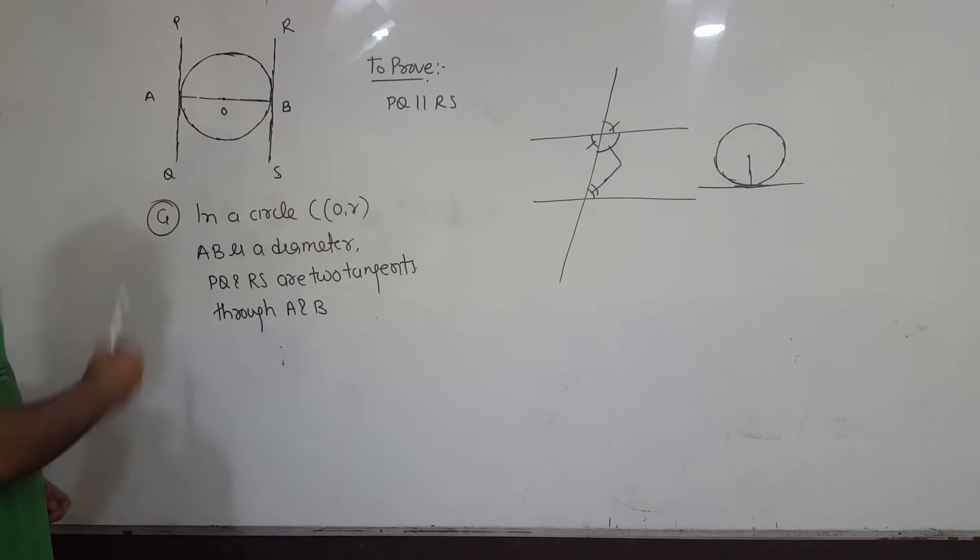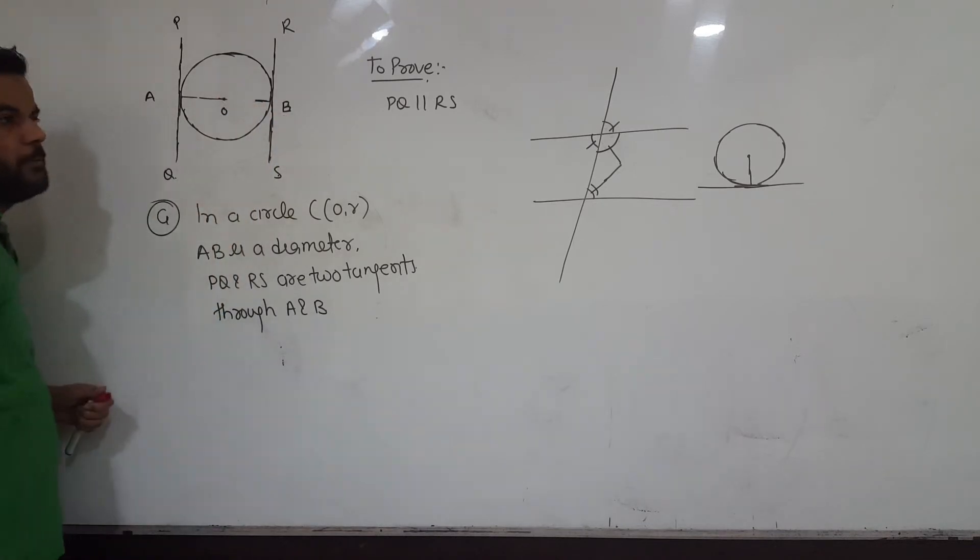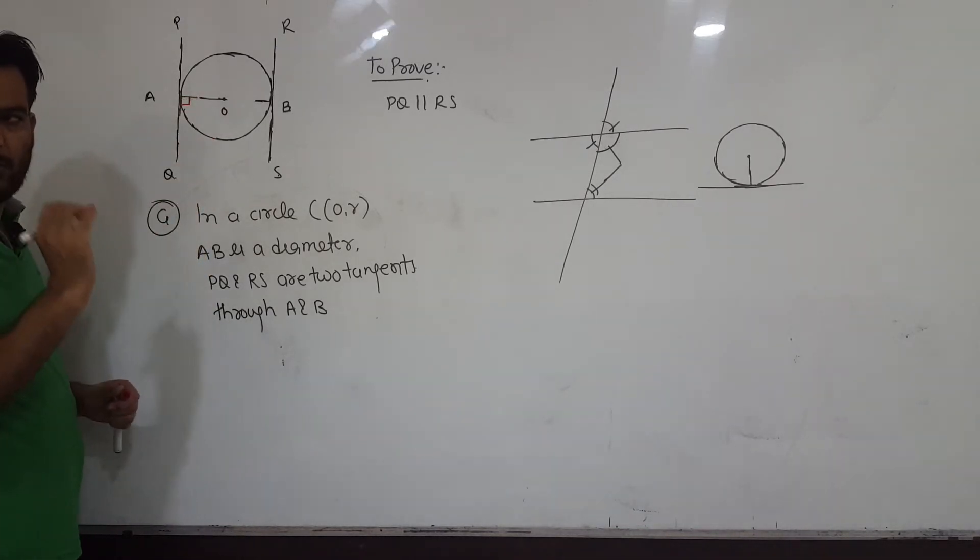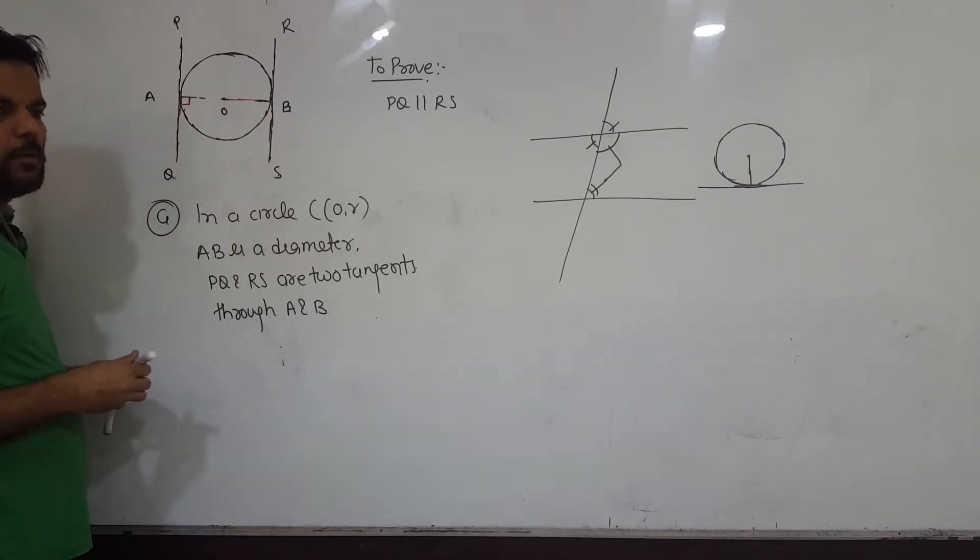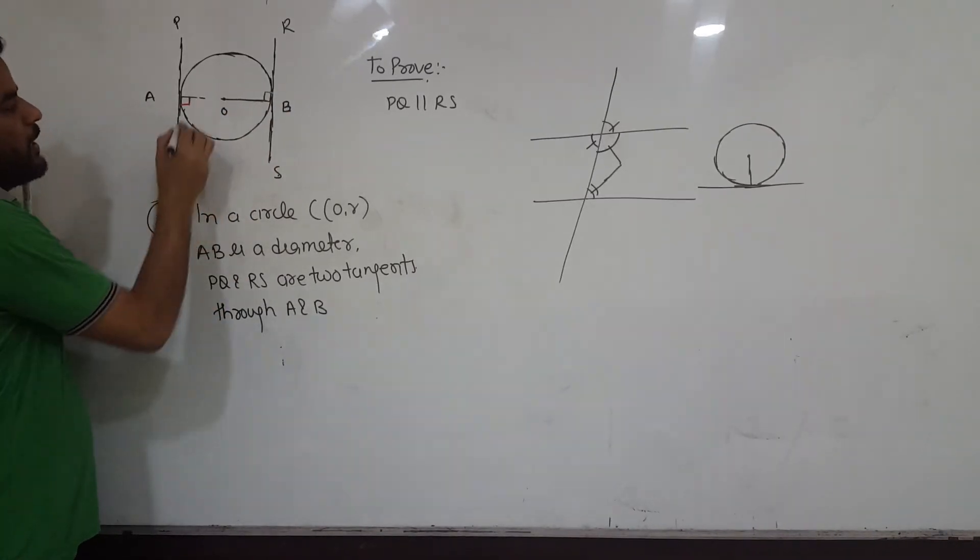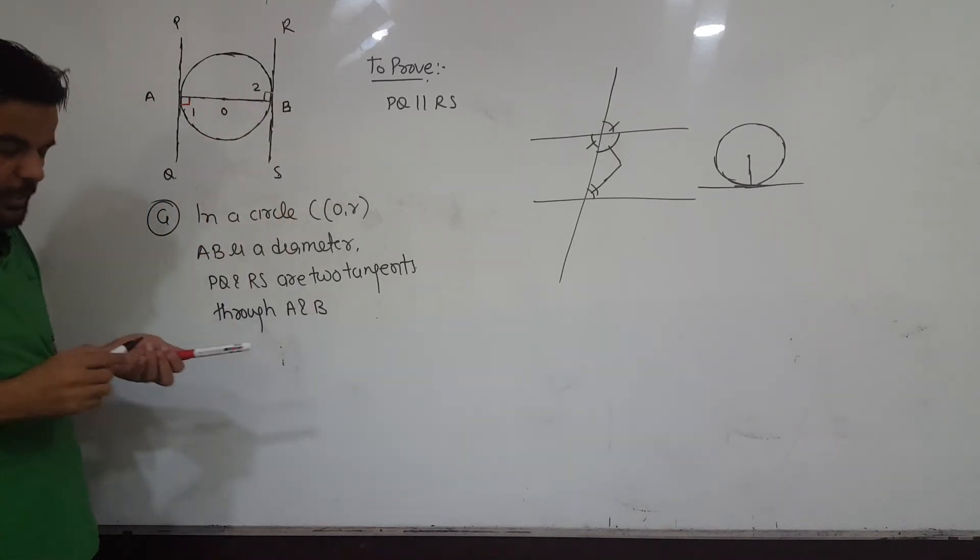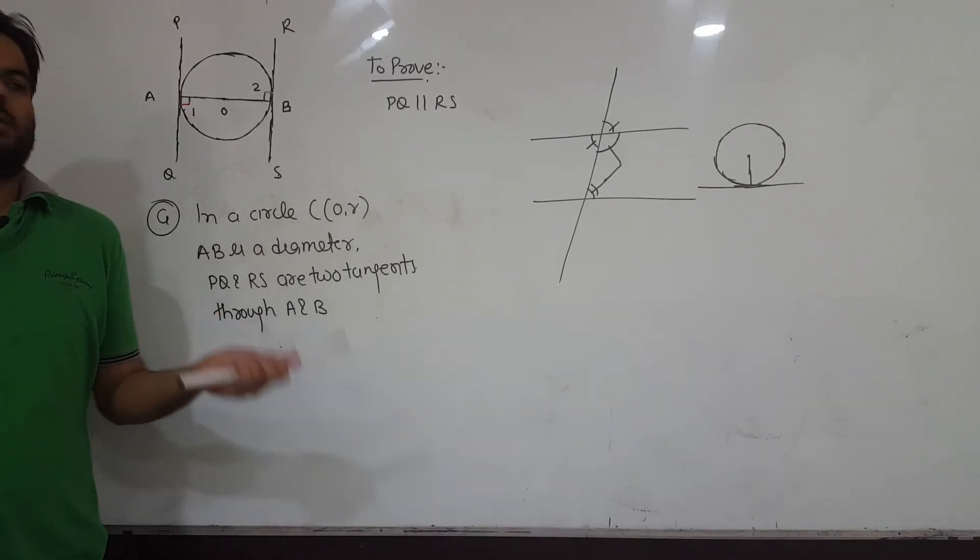When you say it is a diameter, it means it passes through the center, so OA is a radius. Since the radius is perpendicular to the tangent, this angle is 90 degrees. Similarly, OB is also a radius, so that angle is also 90 degrees. Both angles equal 90, so they're equal to each other. But these are alternate interior angles, and if alternate interior angles are equal, then the lines are parallel. That's all we need to write.